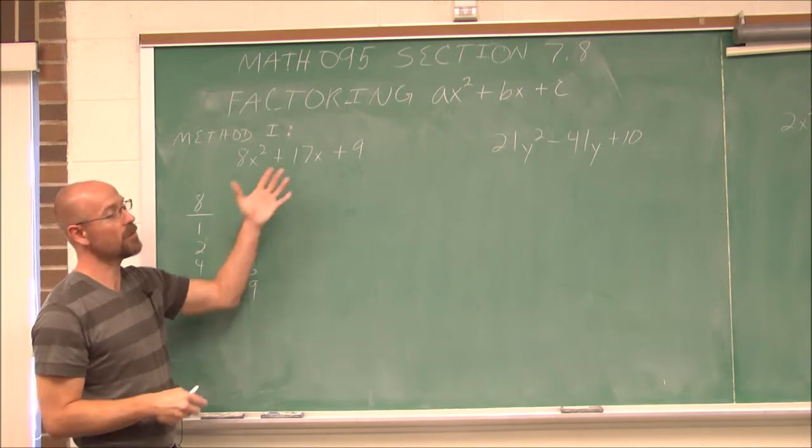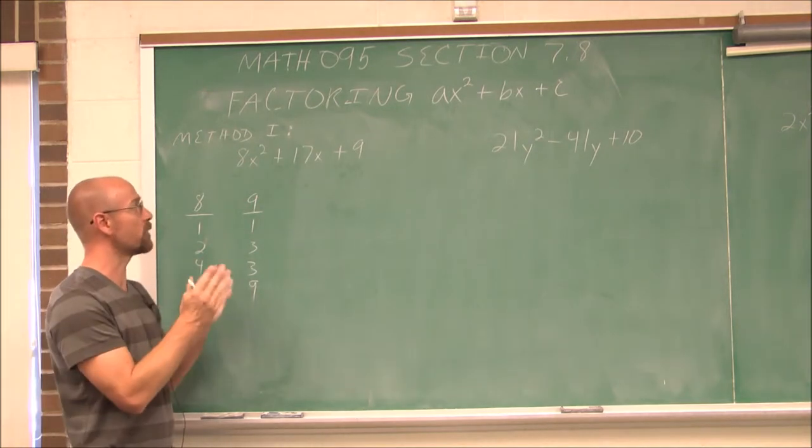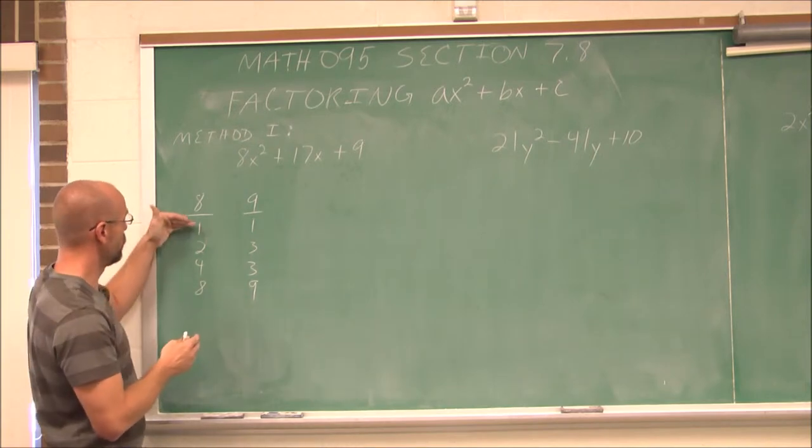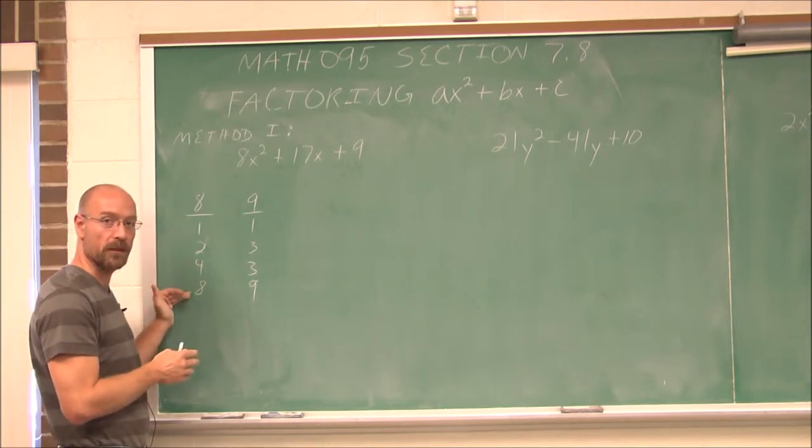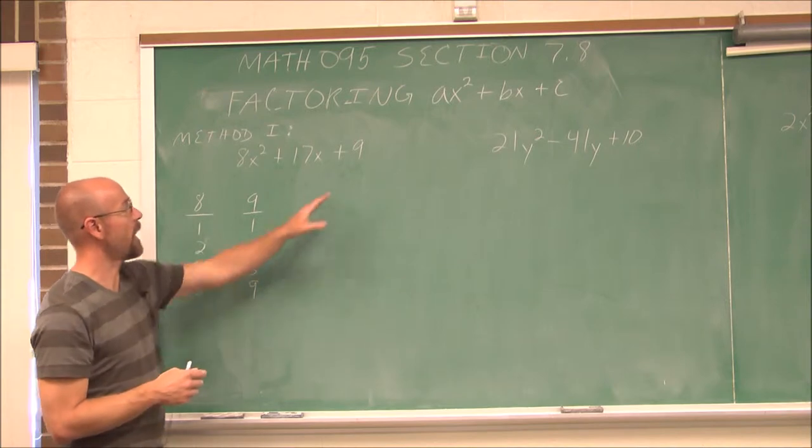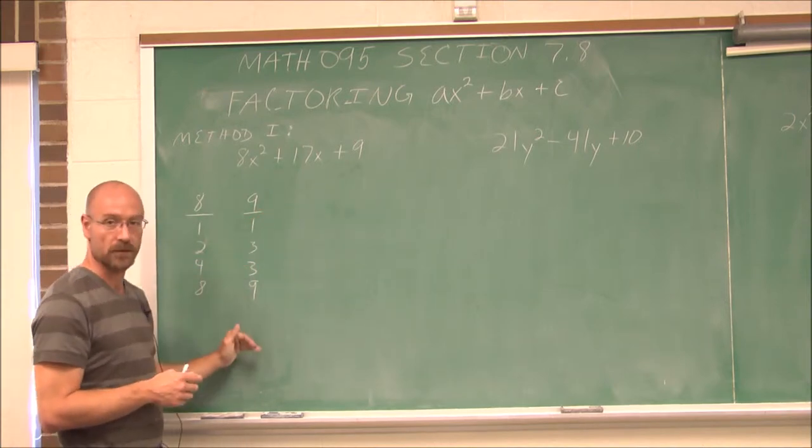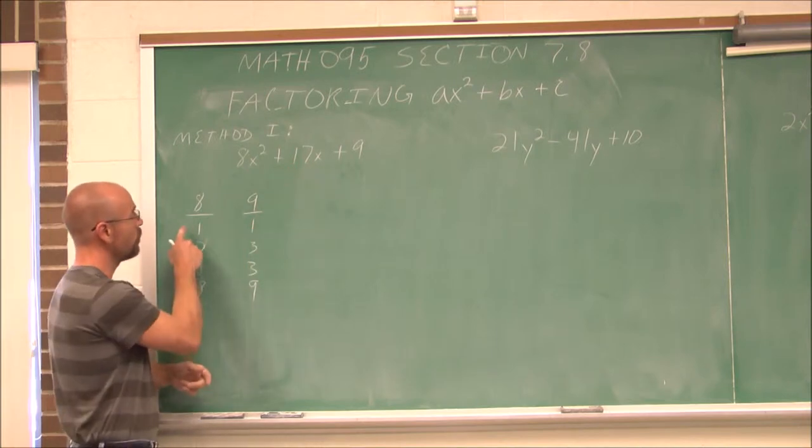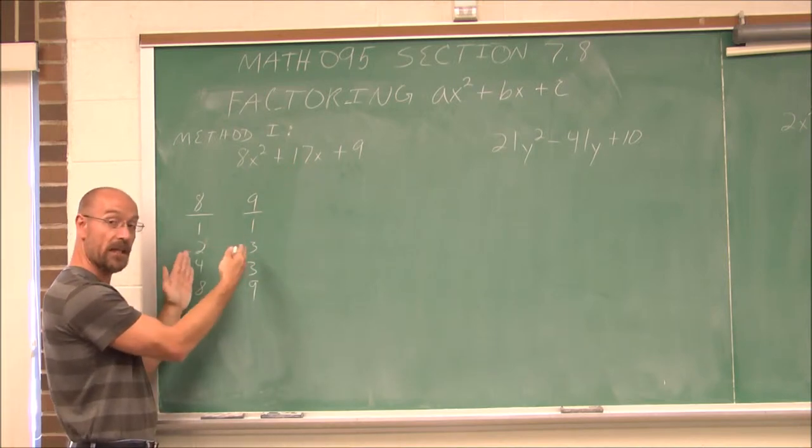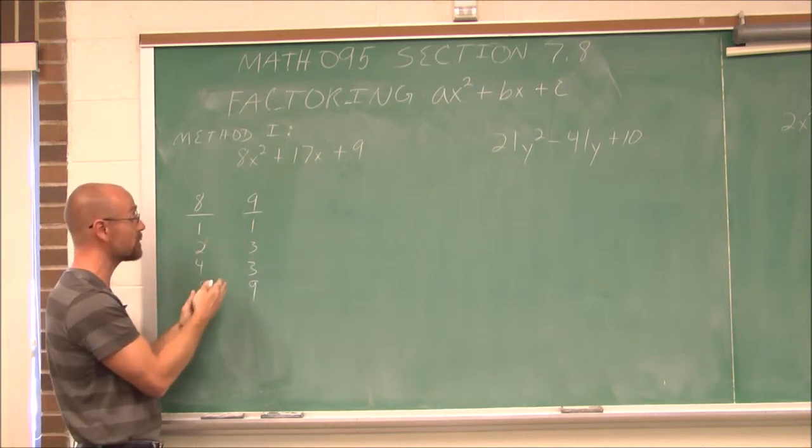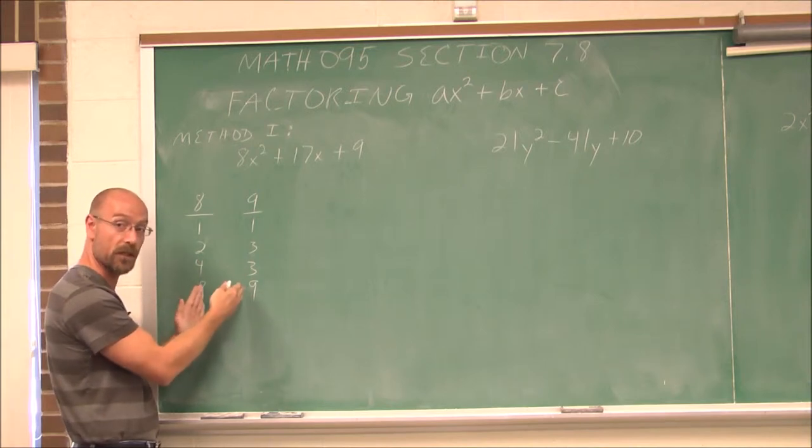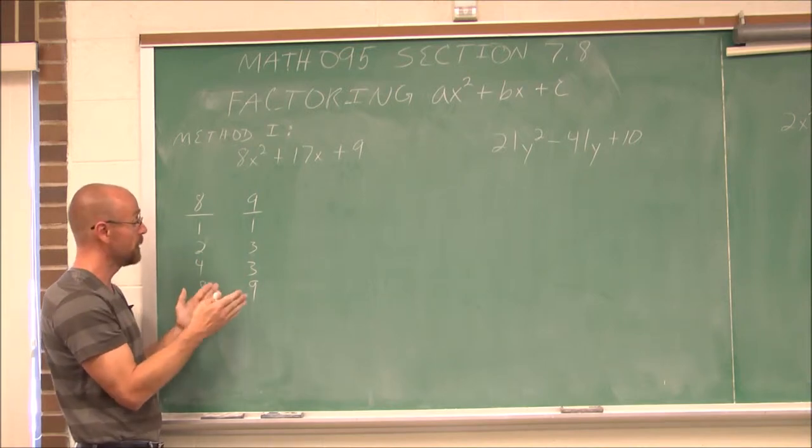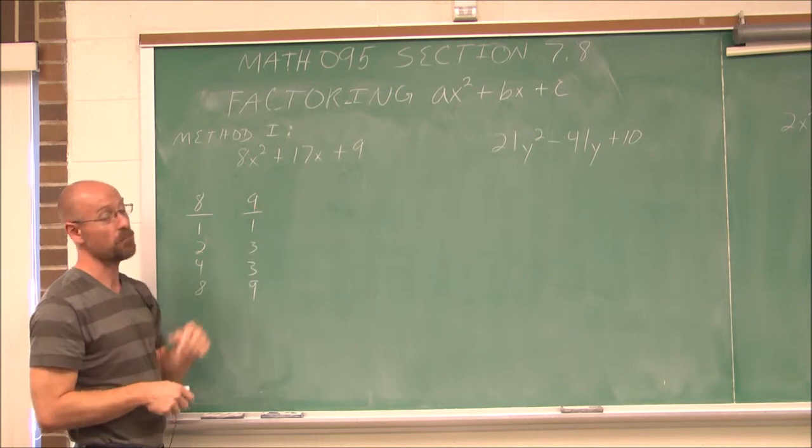And this is positive, which means everything has the same sign. And they're positive, because we have a positive value there. So I'm just going to worry about the positive values. Then I'm going to list all the factors of 9, which would be 1, and 3, and 9. Now, if we think about when we FOIL, the first term would be one of these two factors multiplied together. And the last term is one of these factors multiplied together.